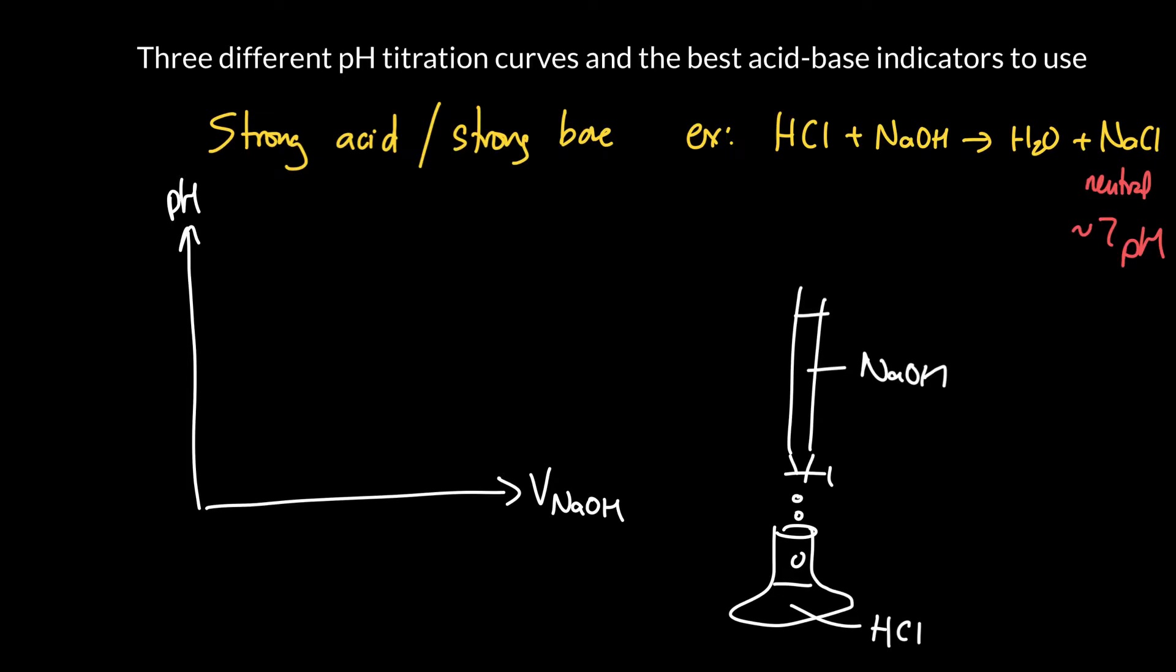The pH initially of the acid is pretty low and as I add more and more base it starts to neutralize and when it's completely neutralized the pH goes up to about seven. Past that point I'm really just dripping in excess sodium hydroxide so the pH rapidly rises.